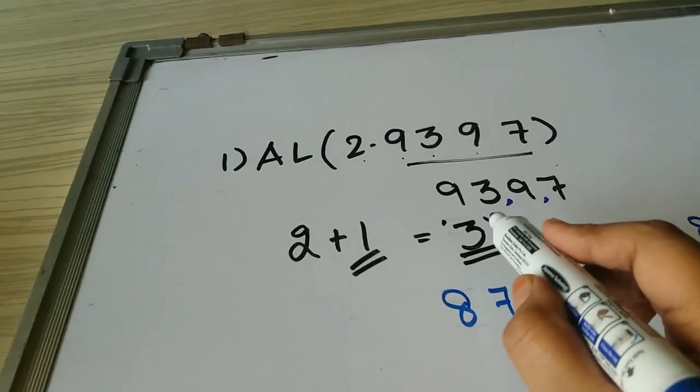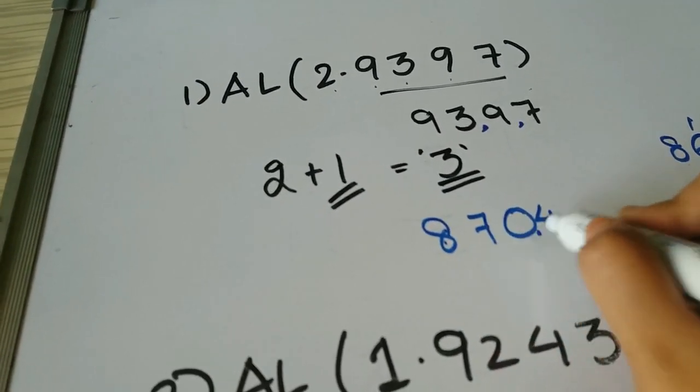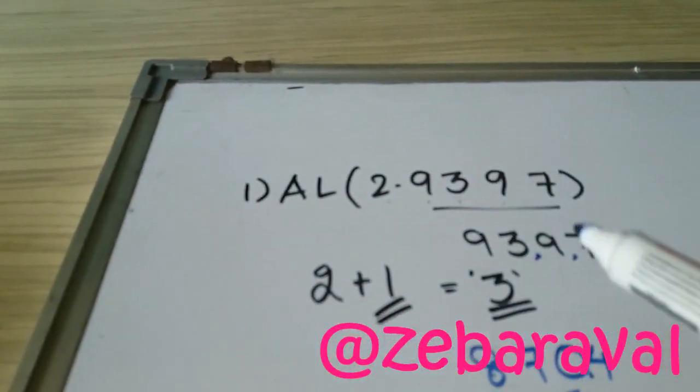And after how many digits will my decimal occur? After 3 digits. So here it is: 1, 2, 3. So here is your antilog of this number.